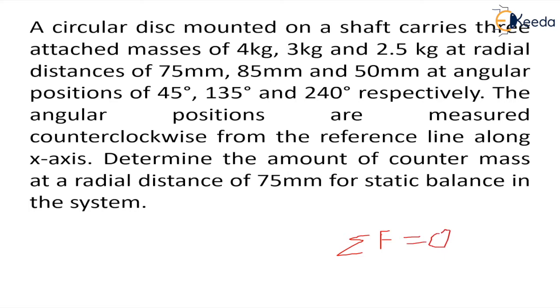In the question it says that there is a circular disc which is mounted on shaft and it carries three masses m1, m2 and m3: 4 kilogram, 3 kilogram and 2.5 kilogram. The radial distances r1, r2, r3 are 75mm, 85mm and 50mm at angular positions of 45 degrees, 135 and 240 degrees respectively.